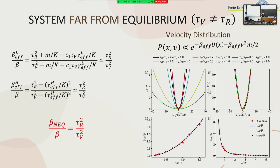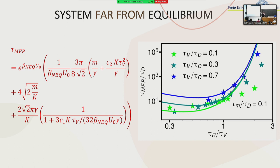We do the same for the velocity distribution and find the same result, as expected. At the end, we insert the non-equilibrium beta into our formula and observe that the formula qualitatively describes our simulation. The important observation is that we are not only modifying the prefactor of the Arrhenius term, but we are modifying the Arrhenius term itself. In particular, increasing tau_r produces a very large exponential increase of the mean first passage time — the same result shown in the motivation at the beginning.